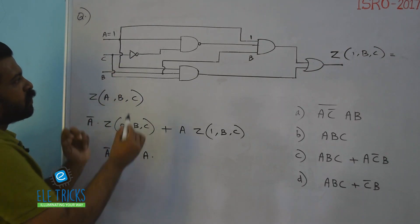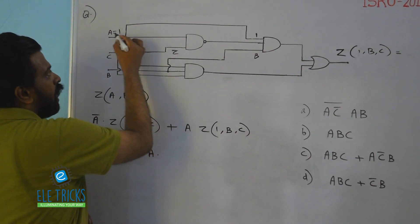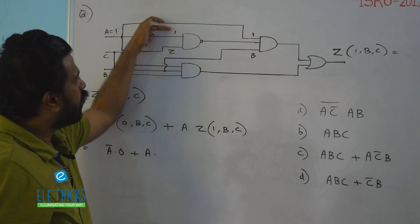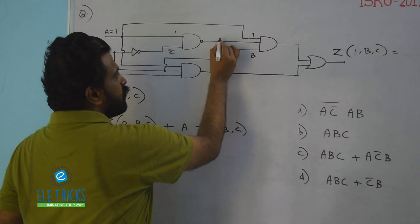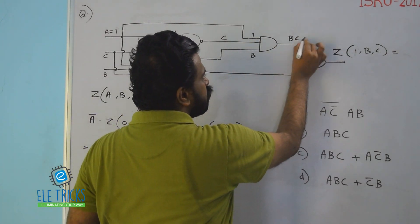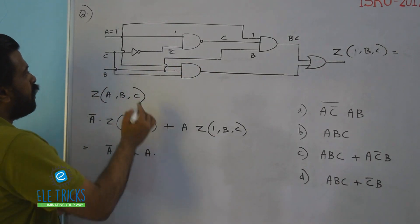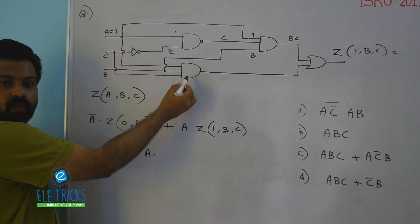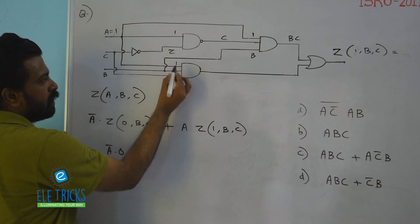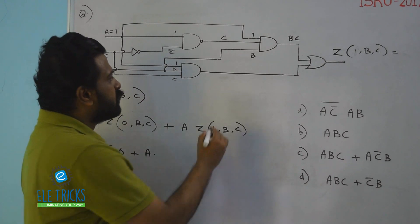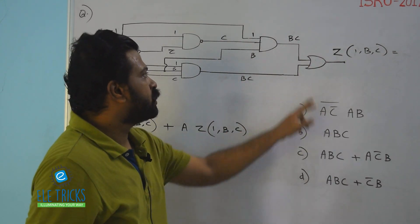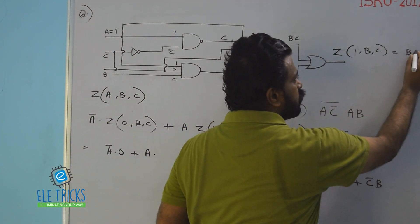With A = 1, the AND gate receives inputs 1 and C-bar, giving output C-bar. Wait — that AND gate has three inputs: 1, C-bar... actually tracing carefully: 1 AND C-bar gives C-bar whole bar which is C, so the AND gate with inputs 1, C, and B gives output BC. For the other AND gate, inputs are 1, B, and C, so its output is also BC. The OR gate has both inputs equal to BC, so the output is BC OR BC = BC. Therefore Z(1, b, c) = BC.